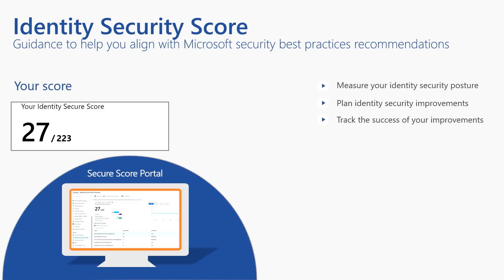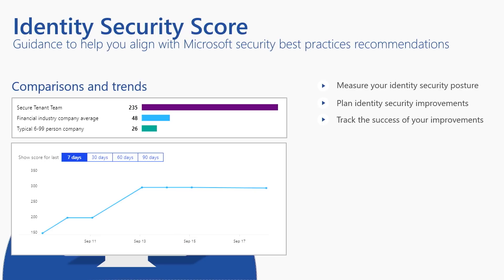Secure Score utilizes a list of recommendations and assigns a score to each of them for completion. In this example, 27 is the credited score for completed items and 223 is the maximum obtainable score for all Identity Secure Score items. Your score is also compared to others in your industry as well as to other companies of your size. You can also track your progress over time to show improvement.